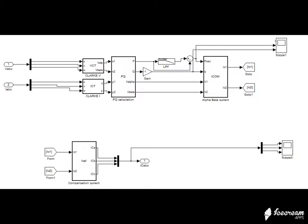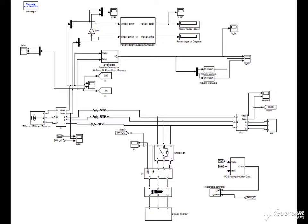The conversion is performed by an algorithm known as the Clark transformation, implemented in the alpha-beta current block. The compensating currents from the controller, IC1 and IC2, are fed to a control system where the reverse Clark transformation occurs and the reference signals ICA, ICB, and ICC are generated. These reference current signals are compared with the inverter current. Initially when inverter current is zero and these reference signals are compared, an error is generated and fed to the hysteresis current control system for generation of reference signals, which are supplied to the inverter device for its control operation.